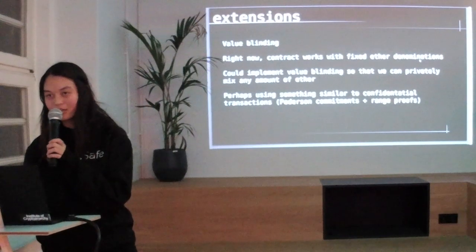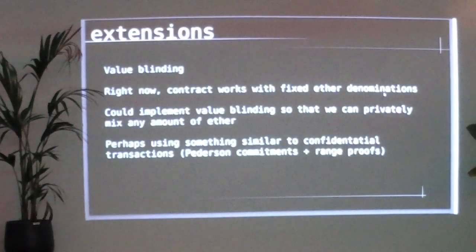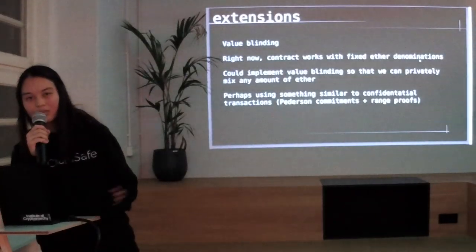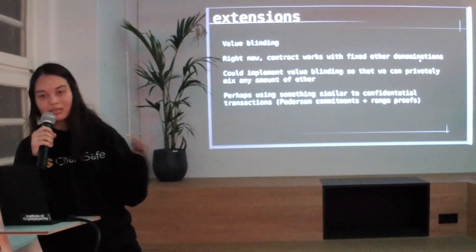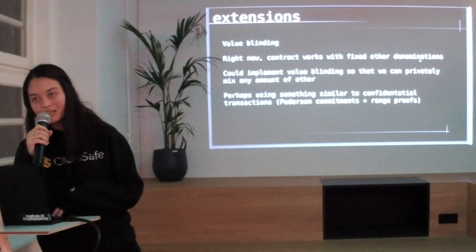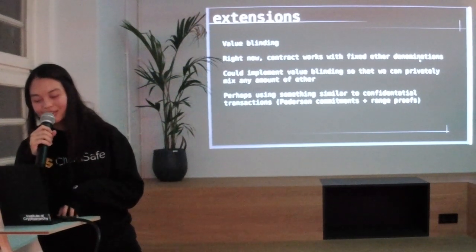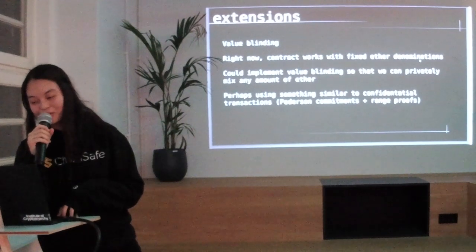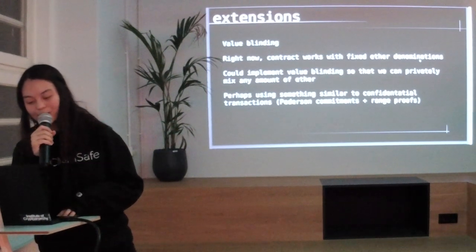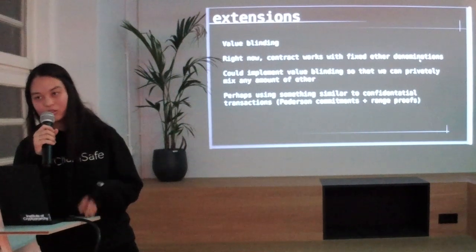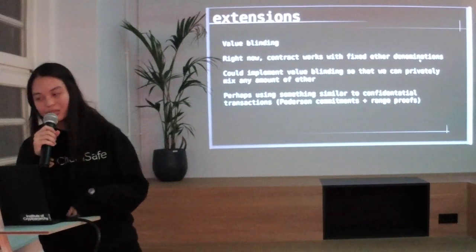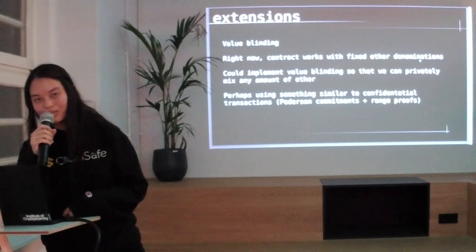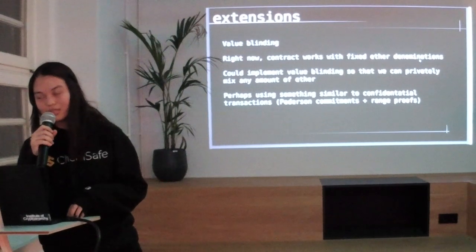Also, a value-hiding extension: as I mentioned, the contract right now needs a fixed ether denomination amount, because if you allow people to send whatever amount of ether they want to the contract, they'd be able to link the sender to the recipient. Value-hiding would be pretty cool — I was just starting to think about this — basically using something similar to how confidential transactions work, using commitments to value instead of the actual value. But this would somehow need people to keep track of all their values off-chain.